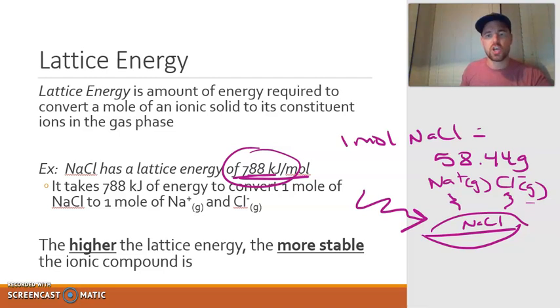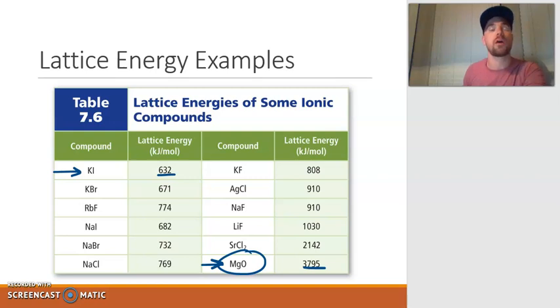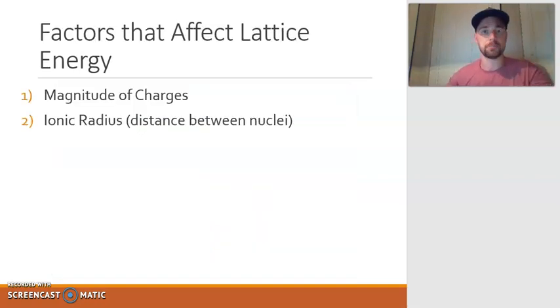Another way to look at lattice energy - the higher the lattice energy, the stronger or more stable that particular ionic compound is. Let's take a look at a table with various ionic compounds and their lattice energies. Potassium iodide is about 632, compared to magnesium oxide which is about 3800. This tells me magnesium oxide is much stronger or more stable than potassium iodide. What if I asked you to determine, based simply on a chemical formula, what compound would have a higher lattice energy? There are some tricks. The two things to look at are magnitude of charges, and if you have to, look at ionic radius or the distance between the nuclei.